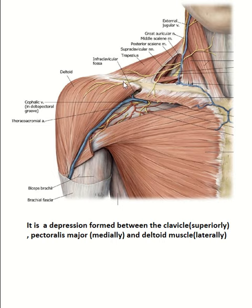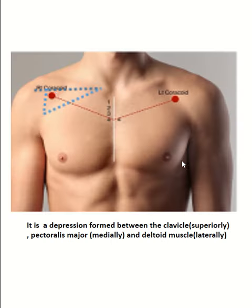This triangle is formed superiorly by the clavicle, medially by the pectoralis major, and laterally by the deltoid muscle. This is the triangle, and this is the location of the tip of the coracoid process.